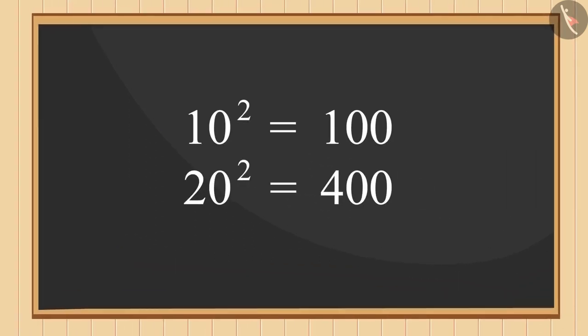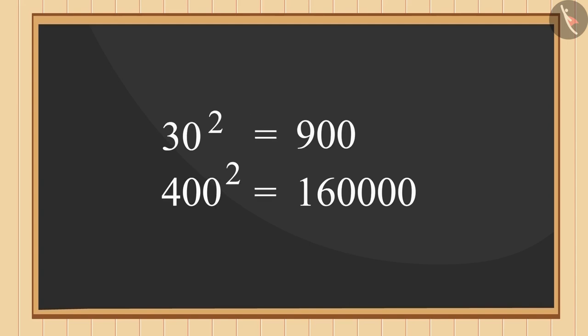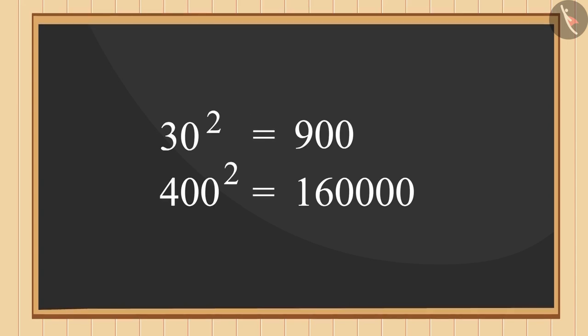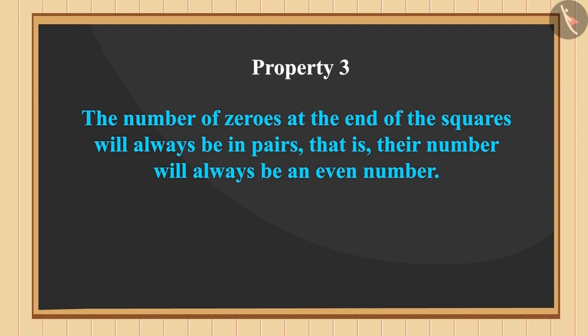Have you noticed the squares of 10 and 20? In these numbers, the number of zeros in square numbers is twice the number of zeros in the original number. For example, look at these numbers.